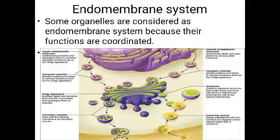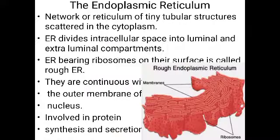Even though mitochondria and plastids have membranes around them, they are not considered under the endomembrane system because their functions are not coordinated — they have entirely different functions. So now we can see about the endomembrane system, starting with the endoplasmic reticulum.